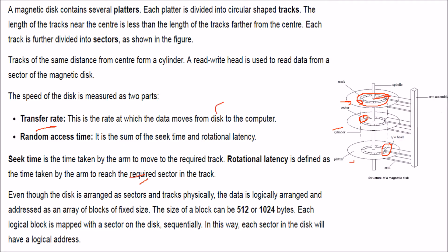First is the transfer rate, that is the rate at which the data moves from disk to computer. Then we have random access time, that is the sum of the seek time and the rotational latency.